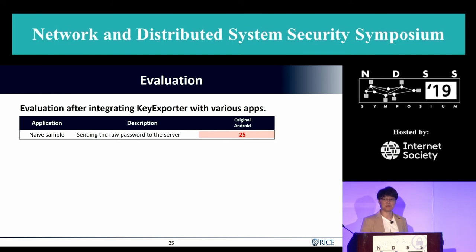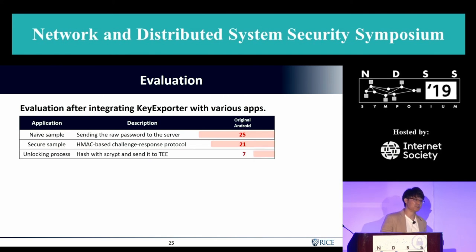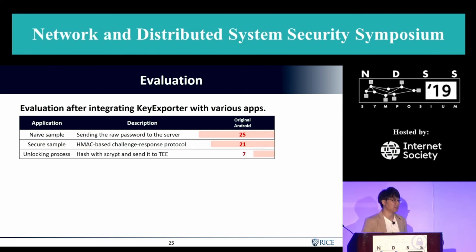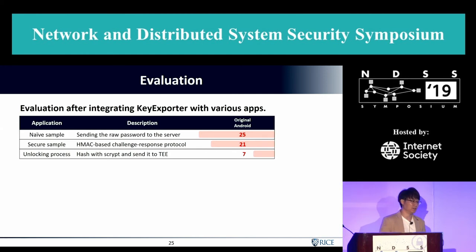The second is a more secure application using an HMAC-based challenge-response protocol. The third is a real secure process: the unlock process, which takes user input, hashes it with scrypt, and sends it to the TrustZone for verification — a very secure design. But they still fail to remove all passwords, leaving seven passwords in memory.